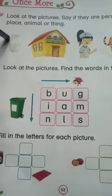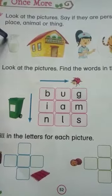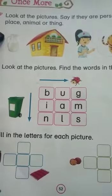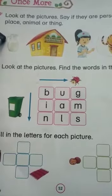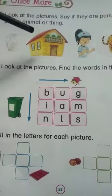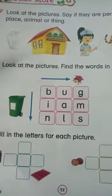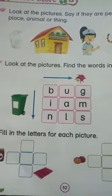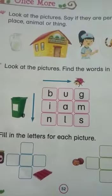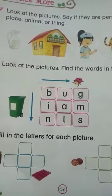For example, things: cup, table, books, bag, pencil. These are all things — book, bag, pencil are things.